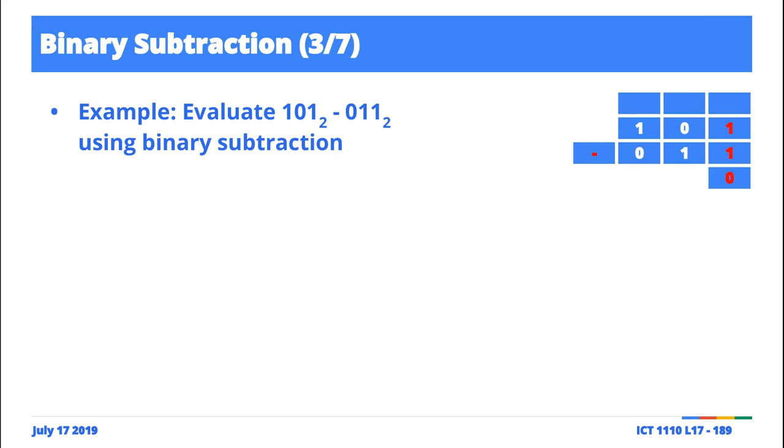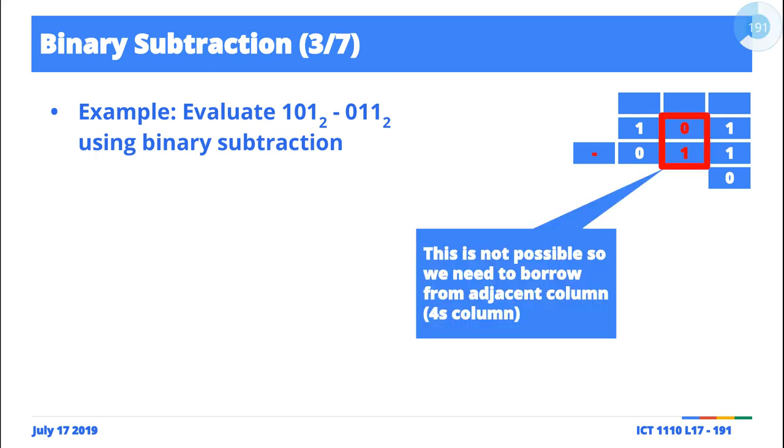But zero minus one—it turns out zero minus one can't work, right? But it turns out there's an adjacent column that we can borrow from. So what we do is we are going to borrow from this adjacent column.